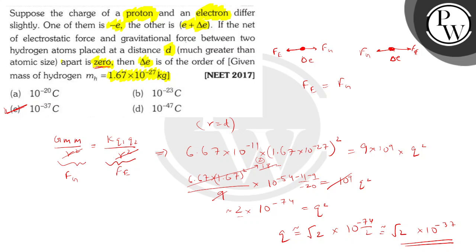So, the final answer for this question is going to be option C: 10^-37 coulombs. I hope you understood the solution. Thank you very much.